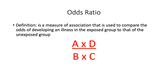The next concept is the odds ratio. An odds ratio is defined as a measure of association that is used to compare the odds of developing an illness in the exposed group to that of the unexposed group. The odds ratio equation is A times D divided by B times C, which can be derived from the contingency table.